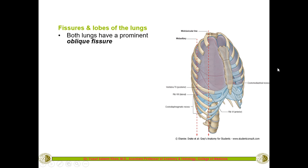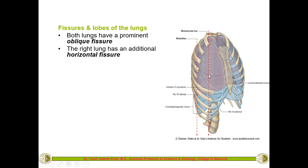Both lungs have a prominent oblique fissure — not horizontal or vertical but oblique. The right lung has an additional fissure called the horizontal fissure. This horizontal fissure is only present on the right side and is not present on the left lung.